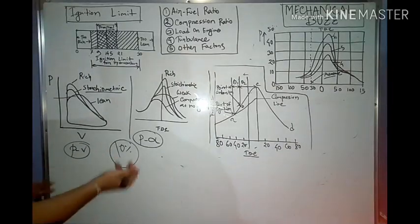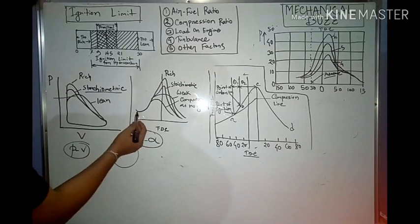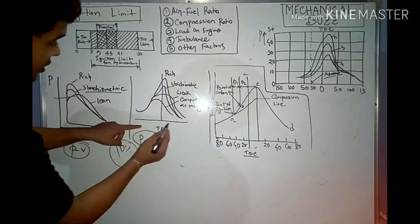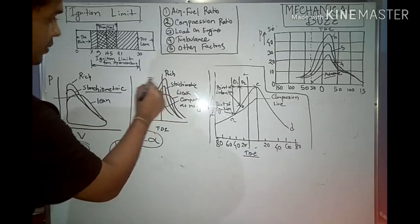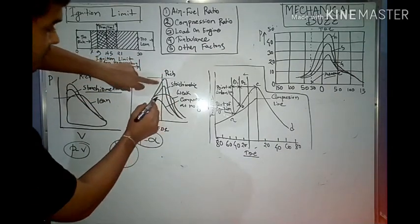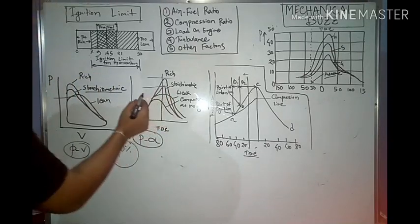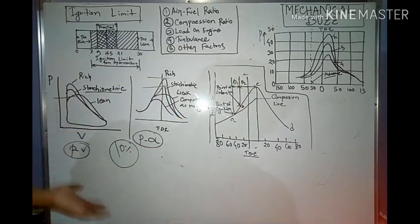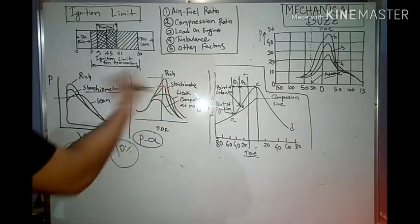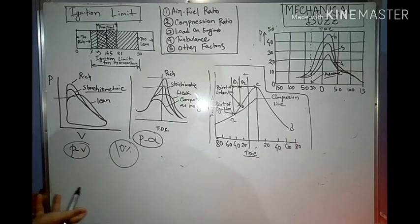Looking at the pressure vs. crank angle diagram with the TDC line, for a rich mixture the pressure increases as crank angle increases, and the peak pressure occurs just after TDC. For the stoichiometric ratio the curve is lesser in height, meaning it does not create as much pressure. For a weak mixture it is very low, and no ignition means much lower pressure — which is very logical.